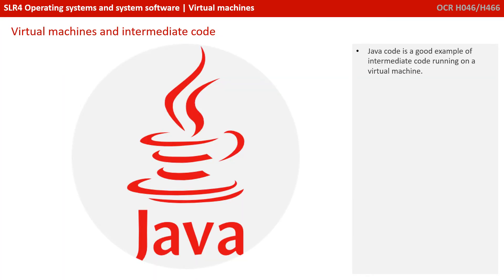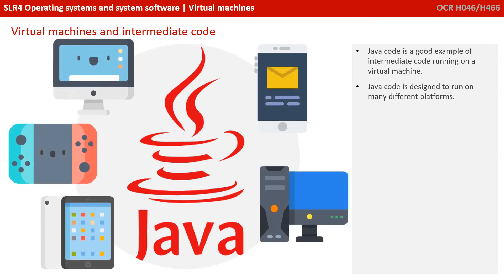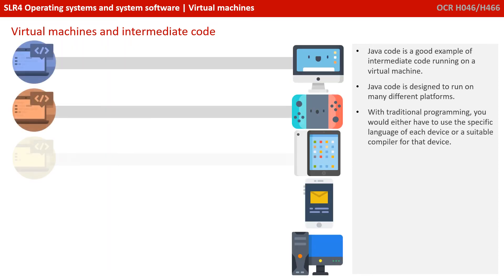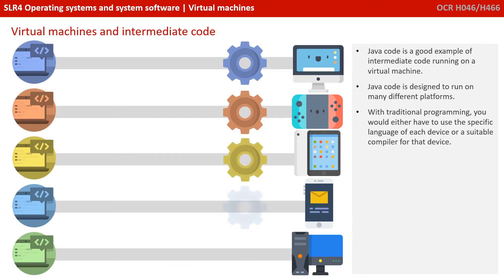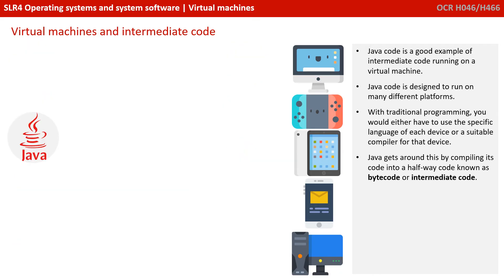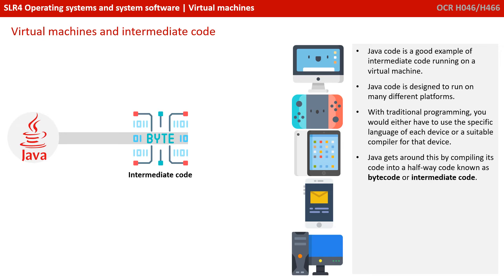Now let's look at virtual machines and what's called intermediate code. The Java programming language is a good example of intermediate code running on a virtual machine. Java code is designed to run on many different platforms. With traditional programming, you would either have to use the specific language of each device or a suitable compiler for that device. Java gets around this by compiling its code into a kind of halfway house known as bytecode or intermediate code.